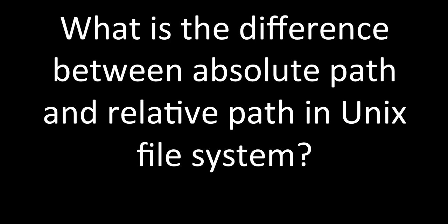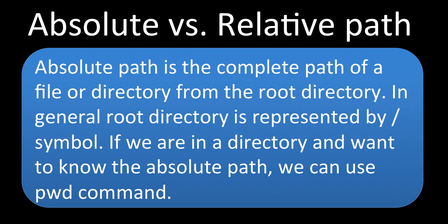Then comes another question: what is the difference between absolute path and relative path in the UNIX file system? What are these two different types of paths? An absolute path is the complete path of a file or a directory from the root directory.